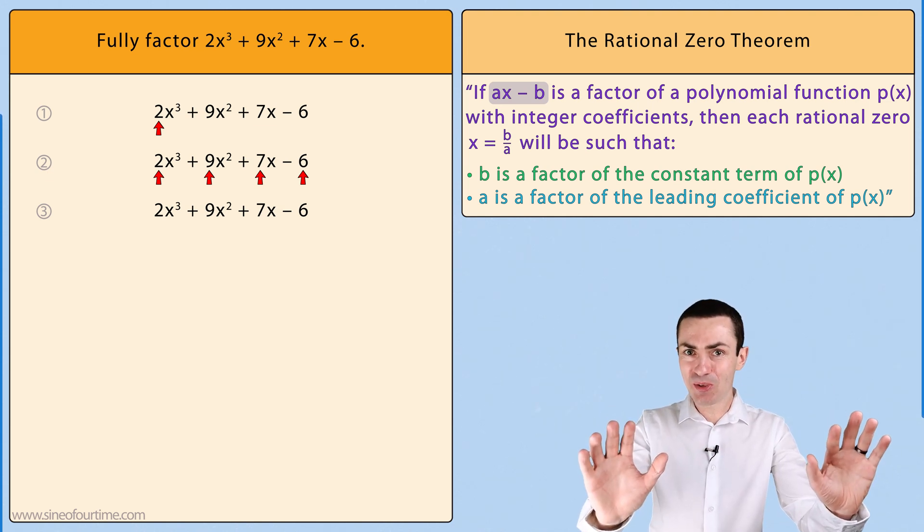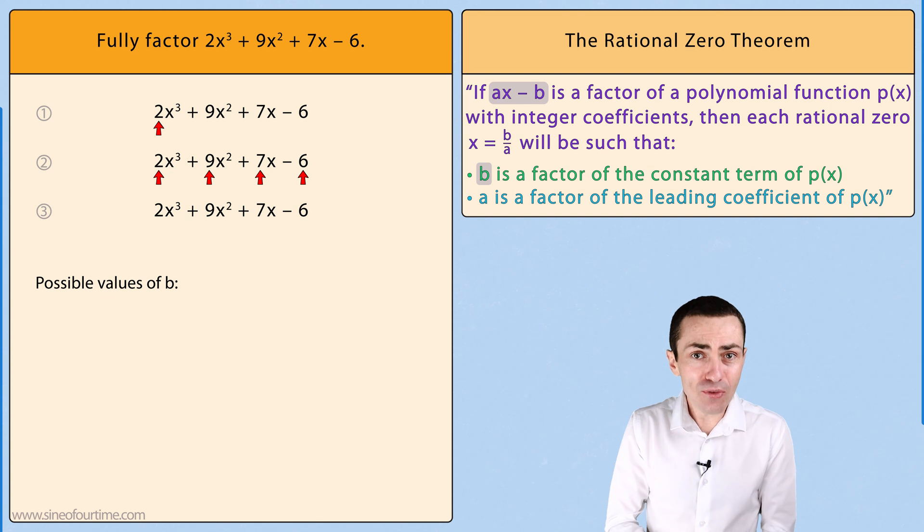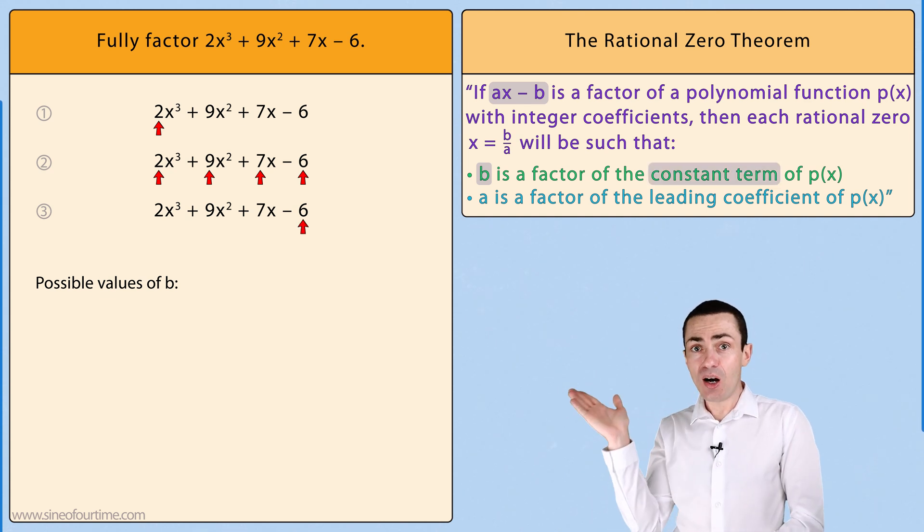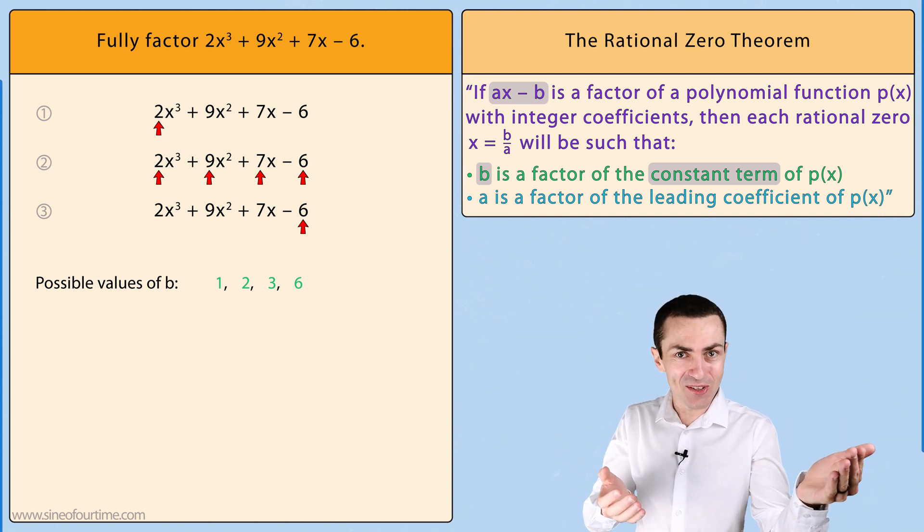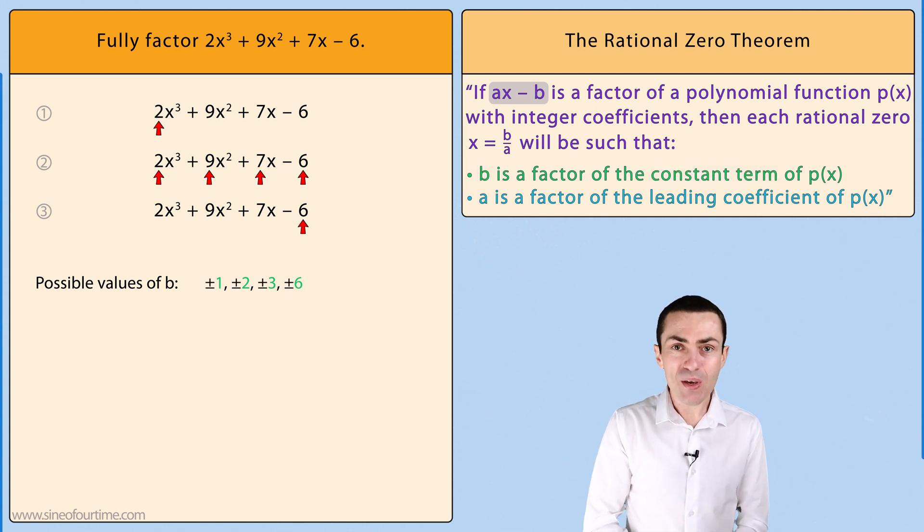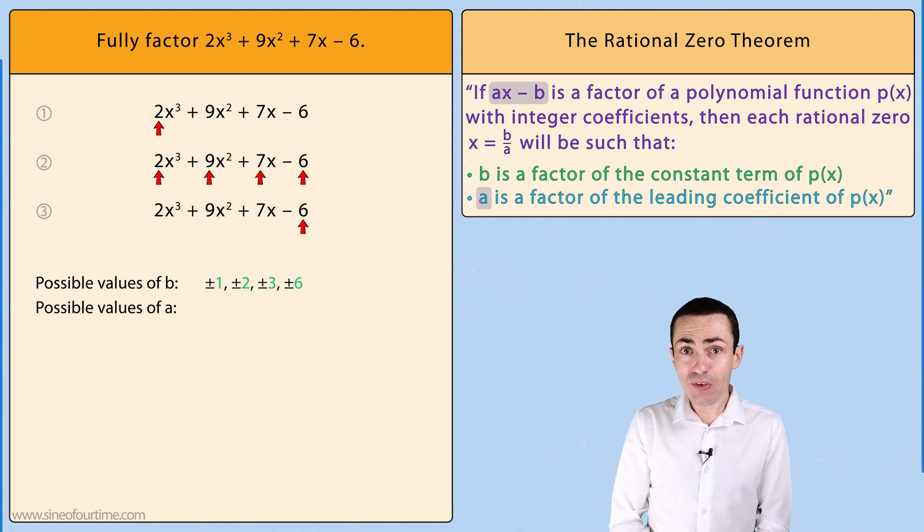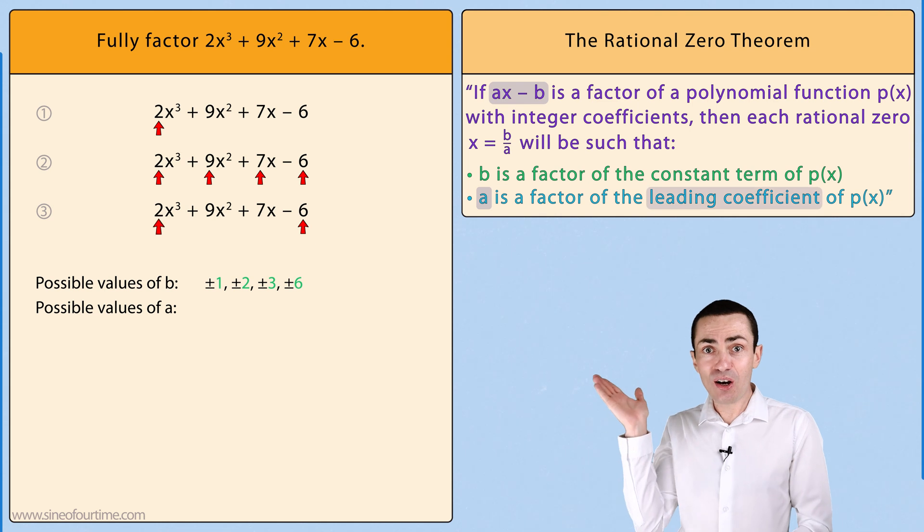With these checks complete we can now work towards finding the first factor of this polynomial ax - b by first listing all of the possible values of b which are factors of the constant term of -6. And don't forget to include both positive and negative values. Secondly, we can work to write down all of the possible values of a which are factors of the leading coefficient of 2.